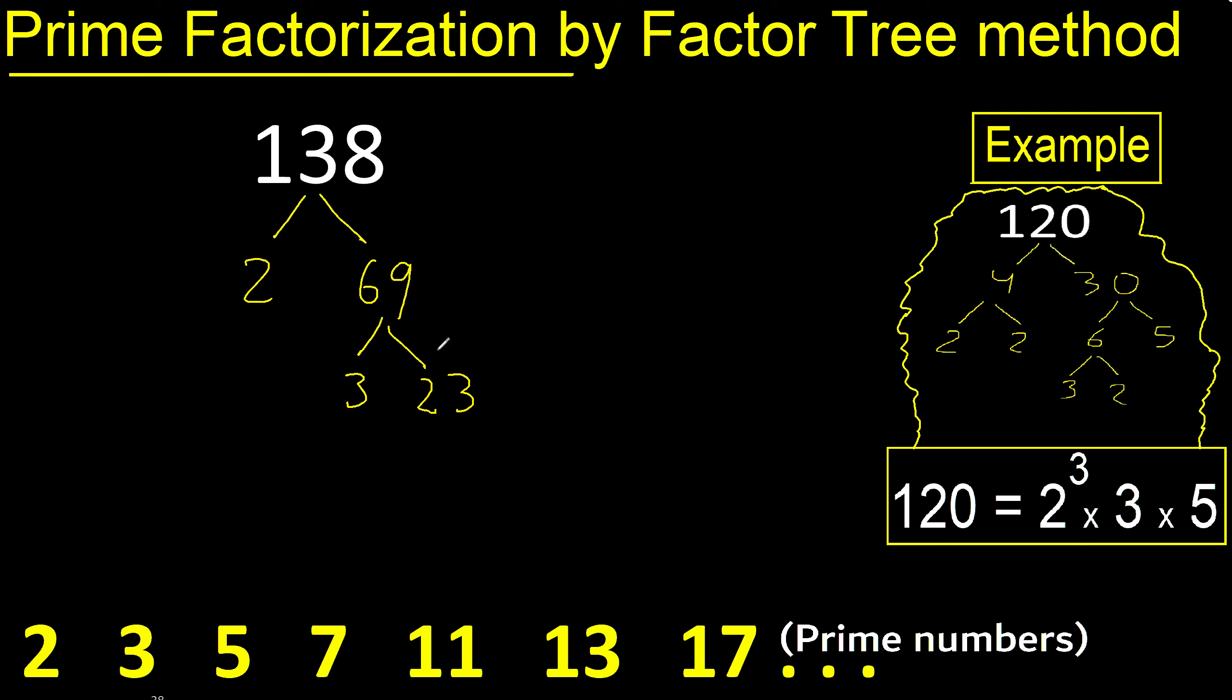Prime numbers. 23 is a prime number because it can only be divided by 1 and itself.